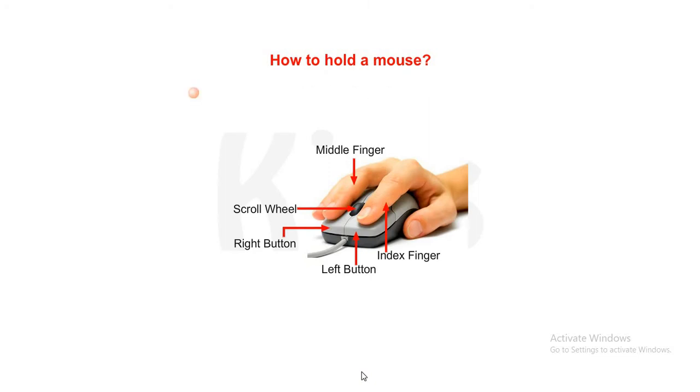Okay students, let us now learn how to hold a mouse. Look at the picture. Place your index finger on the left mouse button. Place the middle finger on the right mouse button. Hold the mouse with the rest of the fingers and thumb. Rest your palm on the mouse.